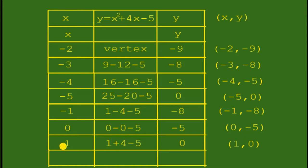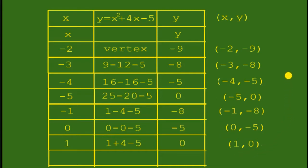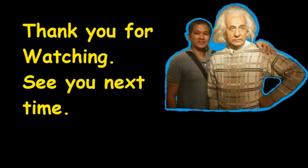For x equals 1, simplifying gives y equals 0, so the ordered pair is 1 and 0. Next time we will plot these ordered pairs on the coordinate plane to find the graph of the quadratic function y equals x squared plus 4x minus 5. Thank you for watching, see you next time.